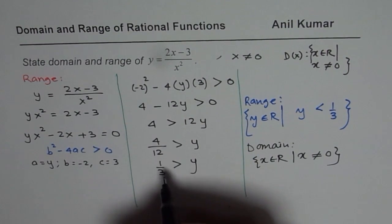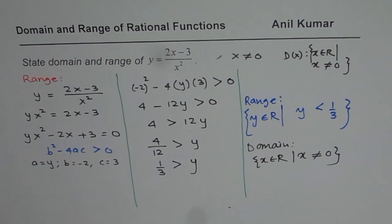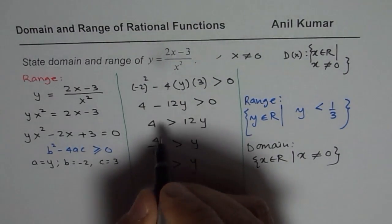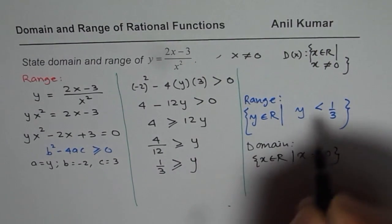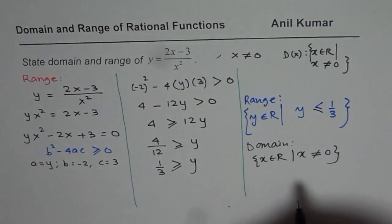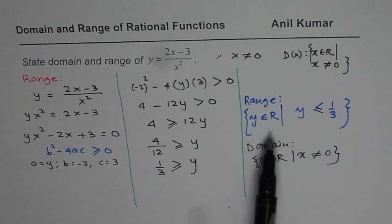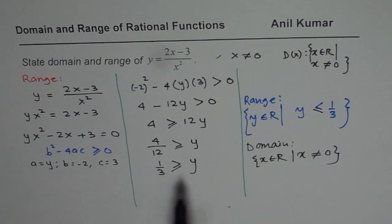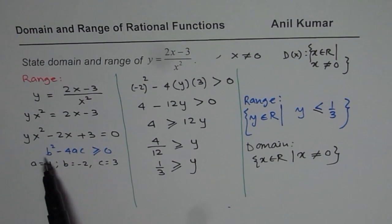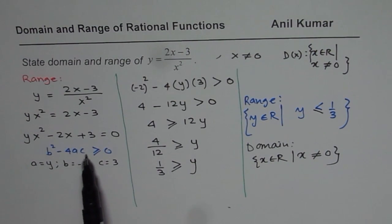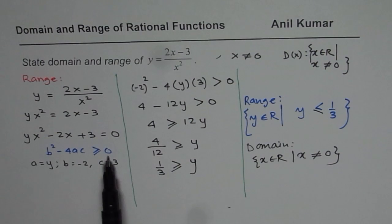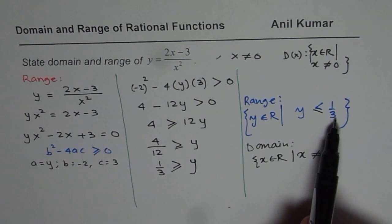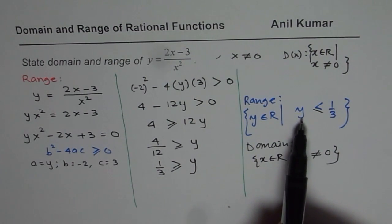Well, it should be greater than or equal to, right? Because at equal to, we will also get a real value. So let me make this change. It will be greater than or equal to, or less than or equal to, correct. So the range for us is that y is less than or equal to 1/3. Sorry for that mistake. Remember, b² minus 4ac greater than or equal to 0 will give us a real solution. That gives us a real solution and therefore we will include 1/3 in our function.